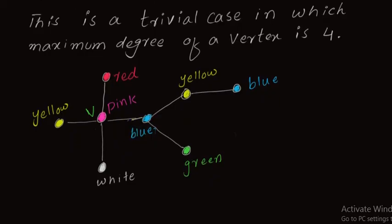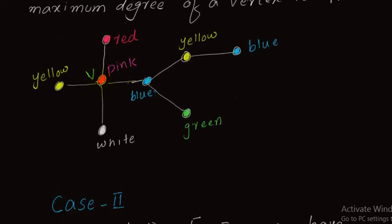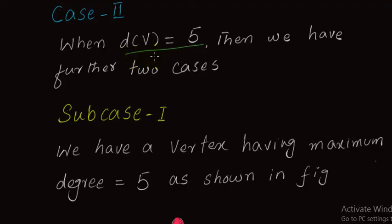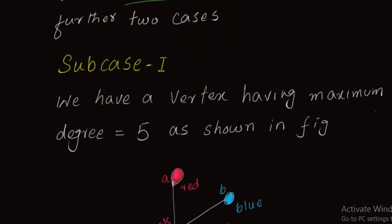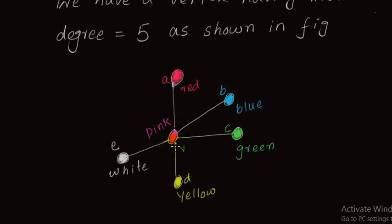Now we discuss the case in which the maximum degree of a vertex is equal to five. Remember, this is not a complete graph — we are just considering that particular vertex where the maximum degree appears. When maximum degree is covered, for the rest of the vertices with degrees less than the maximum, the condition is always true. When the degree of v equals five, we have one or more vertices having degree five. In this case, we prove that the graph always remains five colorable.